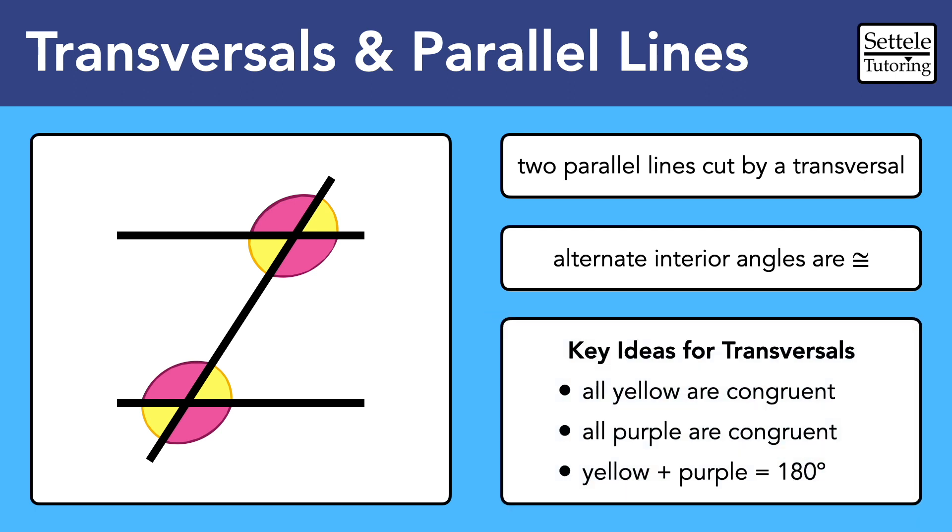To summarize, if we are told that two lines are parallel and a third line crosses those parallel lines, then we form this Z shape with lots of convenient angles. All of the yellow angles are equal to each other. All of the purple angles are equal to each other. And any pair of one yellow and one purple angle is equal to 180 degrees.